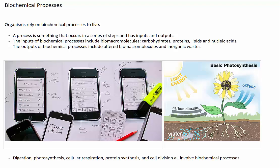Organisms rely on biochemical processes to live. Bio means living, so biochemical refers to the chemical processes that occur in living things. A process is something that occurs in a series of steps and has inputs and outputs.